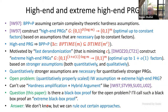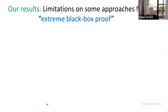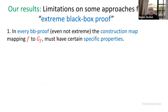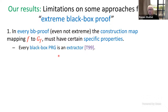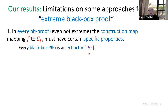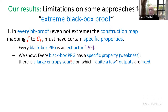What are our results? Our first result is that in every black-box proof, the construction that takes a hard function f and maps it into a pseudo-random generator g must have certain specific properties. It is well known that every black-box pseudo-random generator is also an extractor — a celebrated result of Trevisan from 1999. What we show is that every black-box pseudo-random generator, when viewed as an extractor, has a certain property we interpret as a weakness.